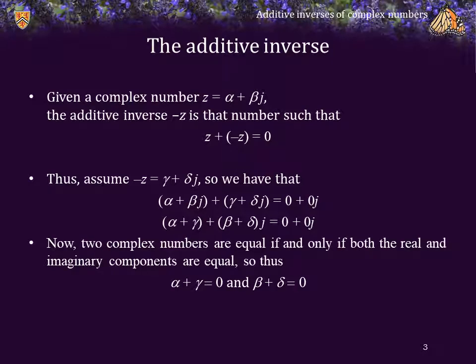Now, two complex numbers are equal if and only if both their real and imaginary components are equal, and thus alpha plus gamma is equal to zero and beta plus delta is equal to zero. Thus, gamma is equal to negative alpha and delta is equal to negative beta. So the additive inverse of z is negative alpha minus beta j.